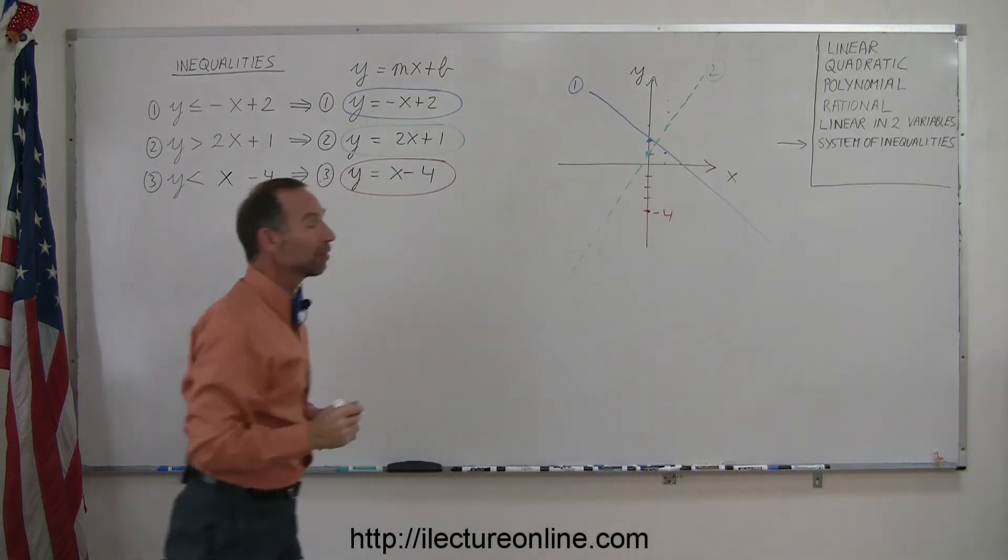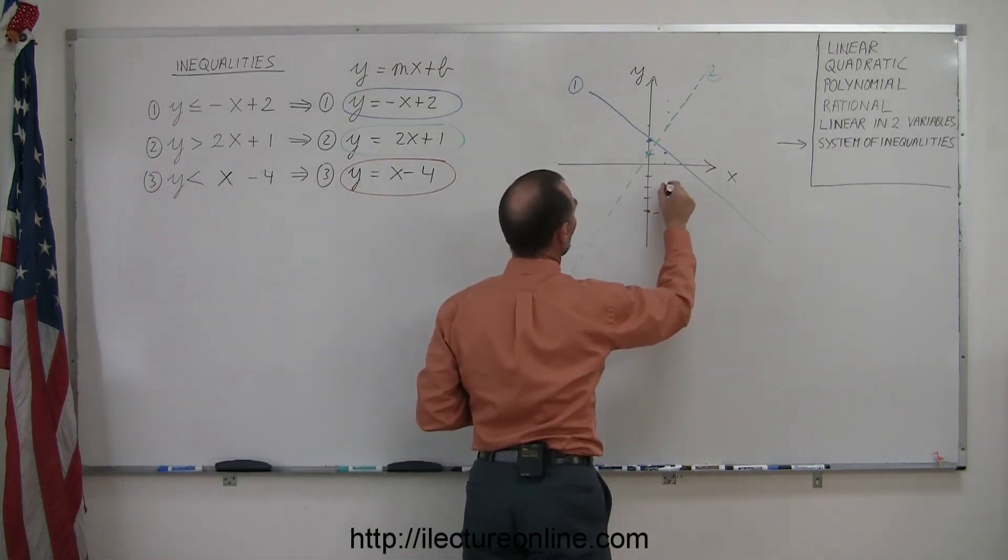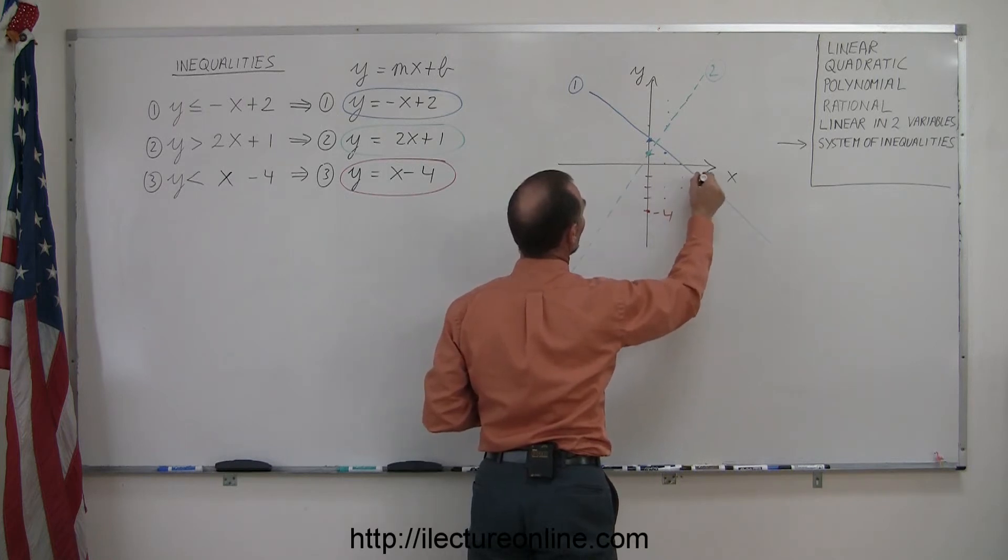And the slope is a positive 1. It means we rise 1, run 1, rise 1, run 1, rise 1, run 1, like so.